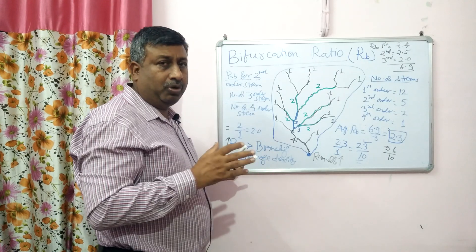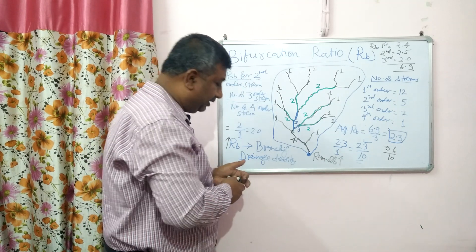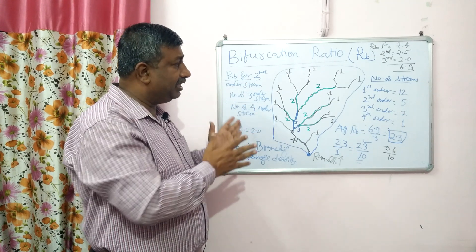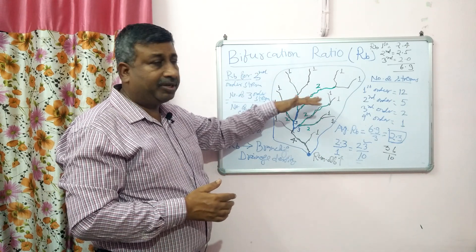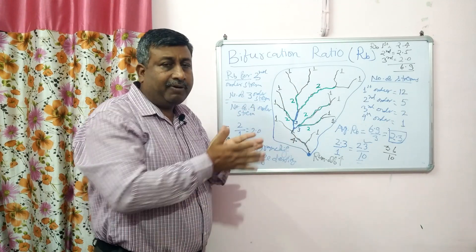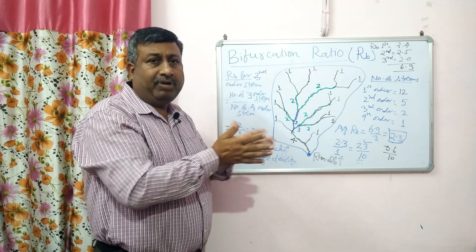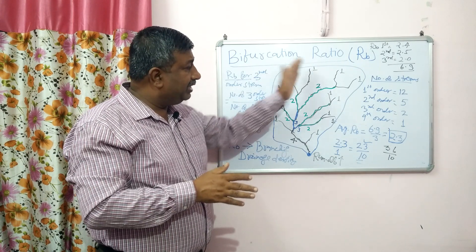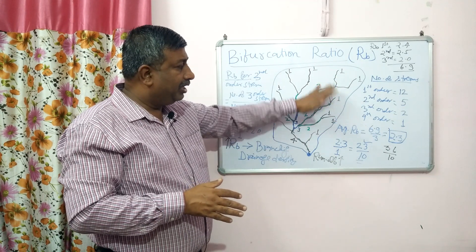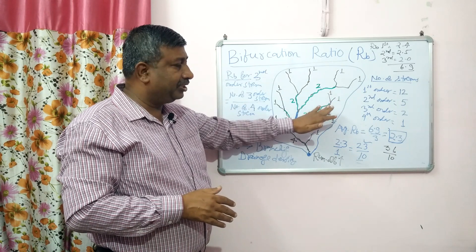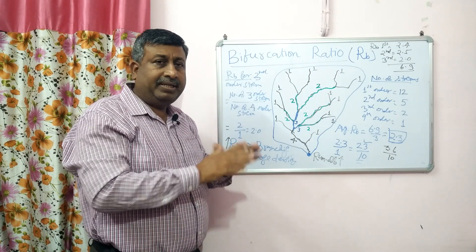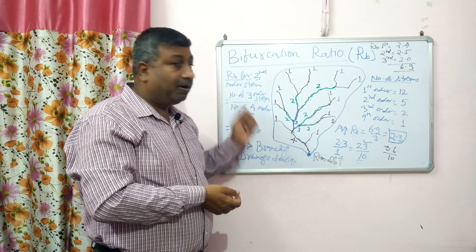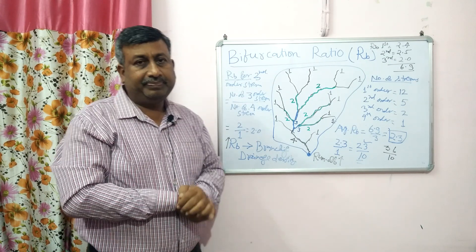Drainage density should be low for high infiltration and recharge of ground water. The significance of bifurcation ratio is that more bifurcation ratio means more runoff, more channels, more streams, more erosion, and structural disturbance. It indicates topography, relief, structures, hard rocks, impermeable soil, hard surface, poor infiltration, and poor vegetation. It indicates the runoff and the infiltration — this is the branching pattern of the stream network and drainage density. Thank you very much.